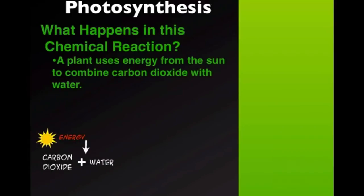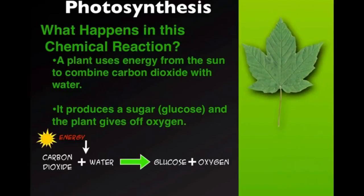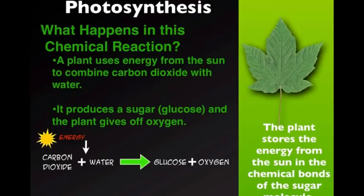And the place where it happens in the plant is a little organelle part of a cell called a chloroplast. So there's chlorophyll, and that's what makes the plant green. That chlorophyll is actually able to use the energy from the sun to convert water and carbon dioxide into sugar. So what happens in this chemical reaction? Well, it's pretty simple. The plant uses energy from the sun, again, to combine water and carbon dioxide. So here's a little diagram that might help you out.